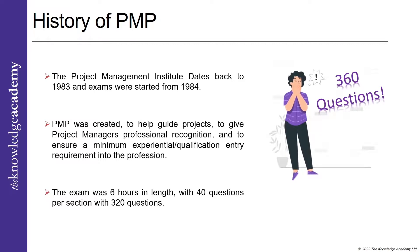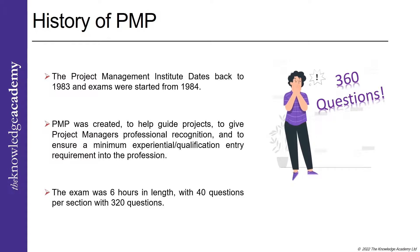Three years later, in 1987, the first draft of the Project Management Body of Knowledge, or the PMBOK Guide, was released. It was rather brief, with only eight six-page sections, but provided a valuable foundation on which to build. In 1994, the PMBOK Guide and exams were updated. The 64-page manual elaborated on the pre-existing eight sections, and the exams were around six hours in length with 40 questions per section and a staggering 360 questions total.